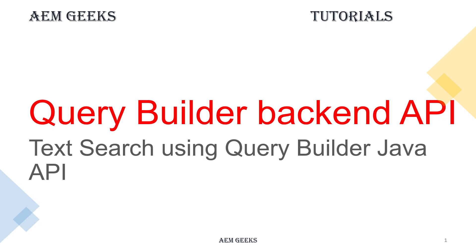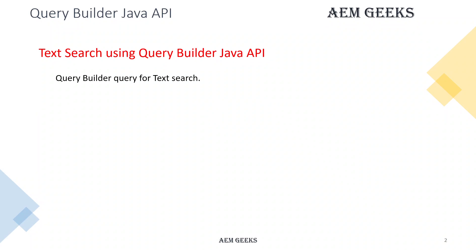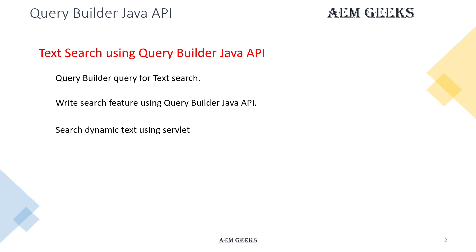Hi, in this tutorial I talk about the Query Builder Java or the Backend API, and how you can use these APIs in any backend module to search content in a repository. For this tutorial, I'll take a scenario of full text search where the user can search a text within a site or full repository. I'll show you a query first, then I'll use Query Builder API to implement the same search in an OSGI service. Then I'll write a servlet, call this OSGI service in that servlet, and pass different inputs using query parameters to get the results.